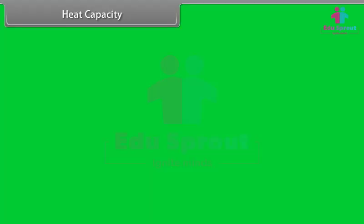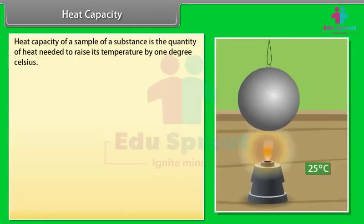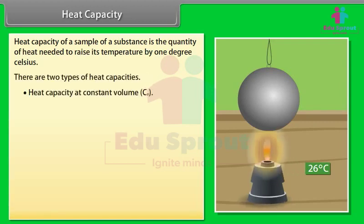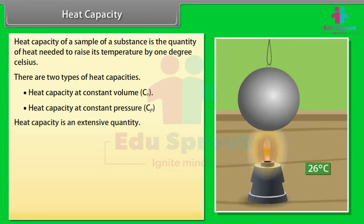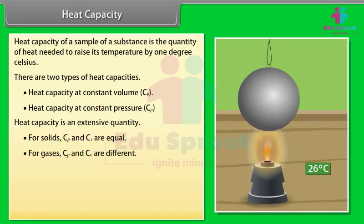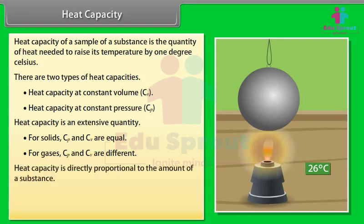Heat capacity of a sample of a substance is the quantity of heat needed to raise its temperature by 1 degree Celsius. There are two types of heat capacities: heat capacity at constant volume and heat capacity at constant pressure. Heat capacity is an extensive quantity. For solids, Cp and Cv are equal, and for gases, Cp and Cv are different. Heat capacity is directly proportional to the amount of substance. Q = Cv × ΔT, where ΔT = Tf − Ti.